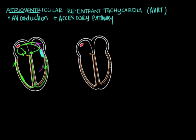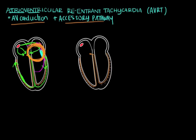Whether the signal goes in the forward or backward direction depends on the timing of the refractory period of the accessory pathway, as well as the direction from which the signal is approaching the accessory pathway. If you have normal conduction through the AV node along with an accessory pathway, this can set you up to have a reentrant circuit — an abnormal loop of electrical activity that could cause a tachyarrhythmia. You need both a working AV conduction system and an accessory pathway to have AVRT.